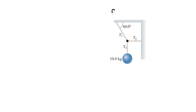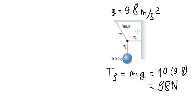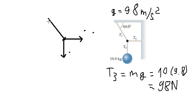Now let's go to the next problem. I will use g equals 9.8. T3 is simple — just m multiplied by g. Now I will find T1 and T2. I will put the black dot here. T3 goes down, T2 goes here, and T1 goes here. I will put the x and y axes here.